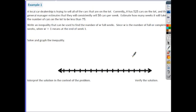So let's do one example to show this. A local car dealership is trying to sell all the cars that are on the lot. Currently, it has 525 cars and the general manager estimates that they will consistently sell 50 cars per week. Estimate how many weeks it will take for the number of cars on the lot to be less than 75.